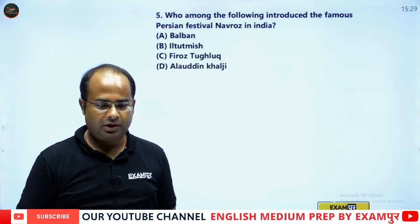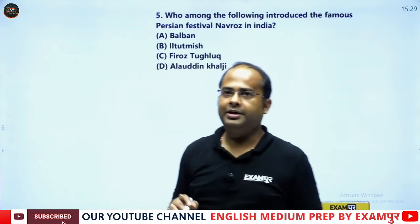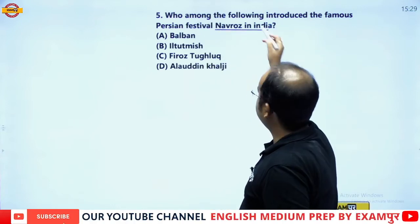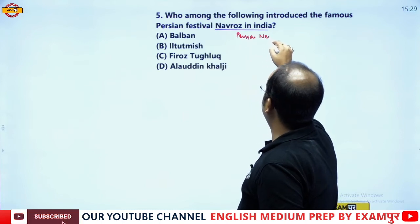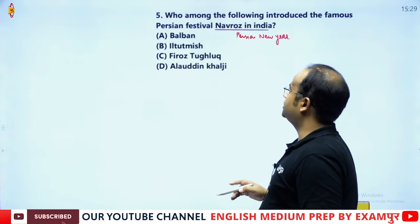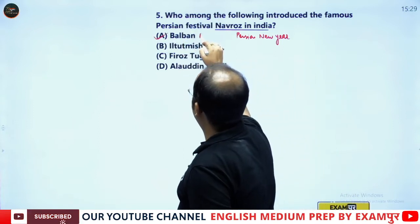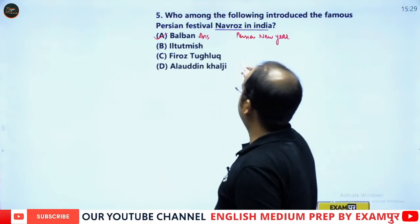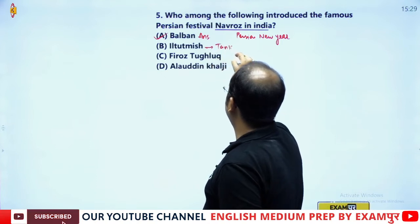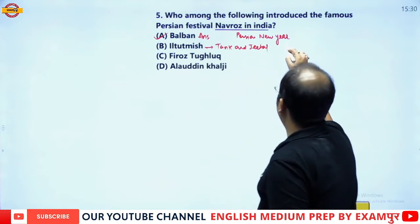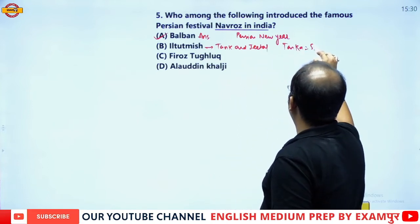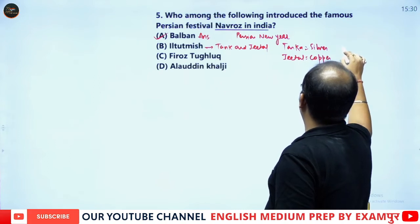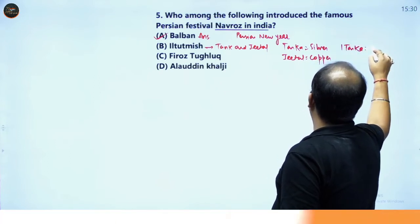Navroz is a Persian New Year festival, and it was introduced by Balban. Iltutmish introduced two coins — Tanka and Jital. Tanka was made of silver and Jital was of copper, and one Tanka was equal to 48 Jital. Therefore, the correct answer is option A, Balban.